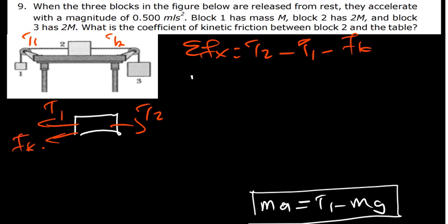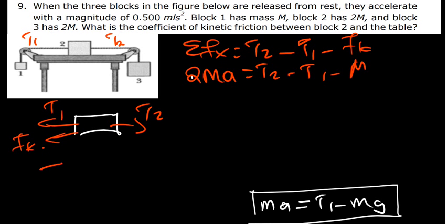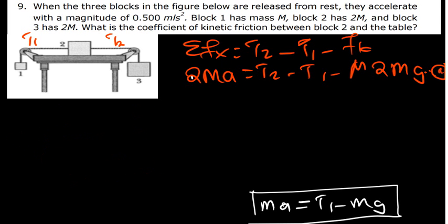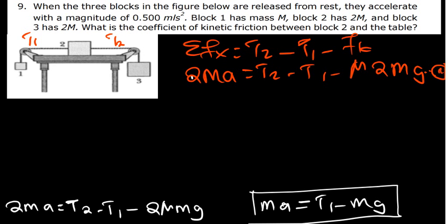The summation of all forces in the x-axis gives us: 2M times acceleration equals T2 minus T1 minus the friction force. The friction force is μ times the normal force. The normal force is 2mg because the mass is 2m. Replacing, our Equation 2 is: 2MA = T2 − T1 − 2μmg.